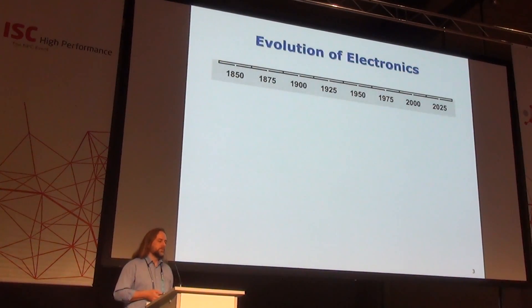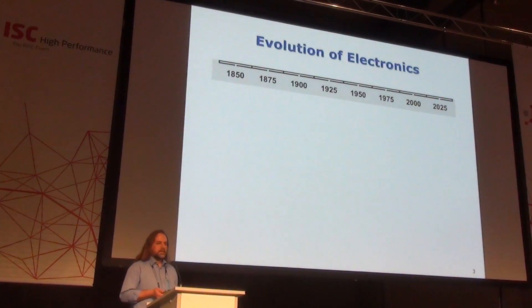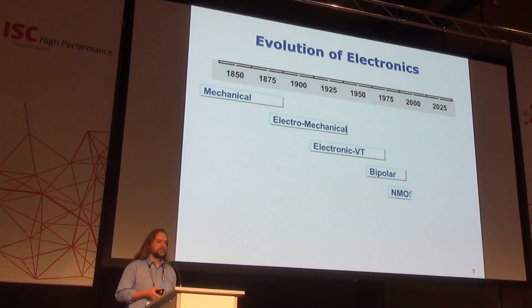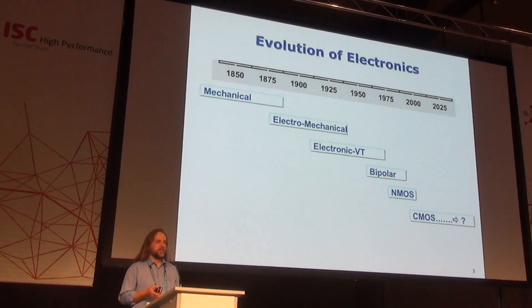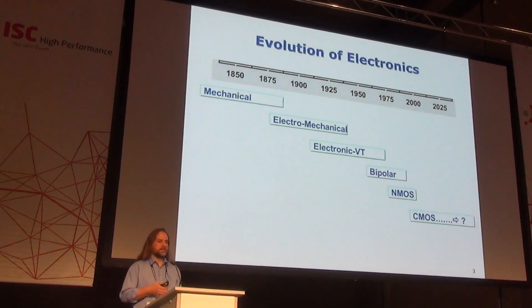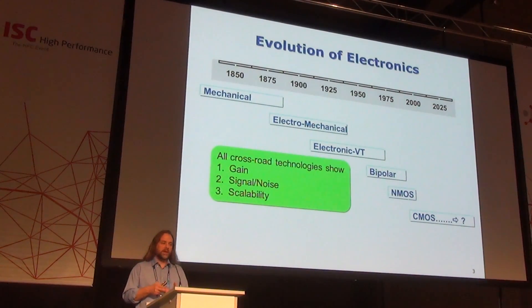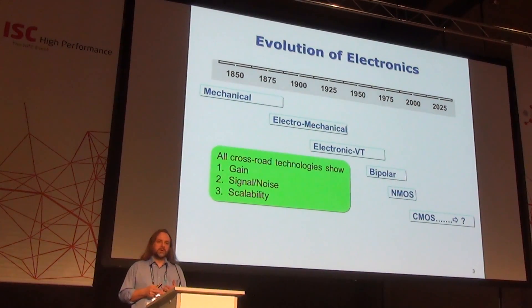What does it mean to look at the evolution of electronics and how it's impacted things? We had mechanical, moving to electromechanical, vacuum tubes, bipolars, NMOS, PMOS, ultimately CMOS, and now this question about what's coming. If you look at the trend line historically, at each of the crossings, each was defined by having three basic components: you have to have gain, you have to have signal and noise control, and you have to have scalability.